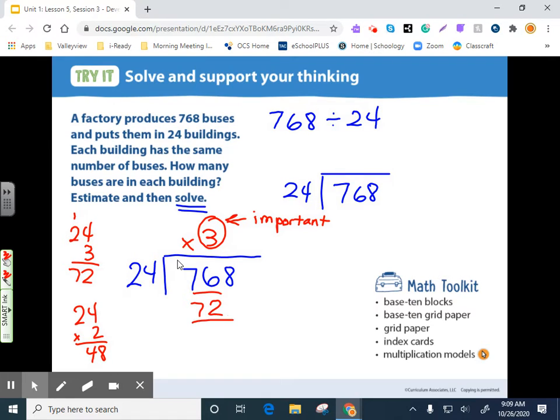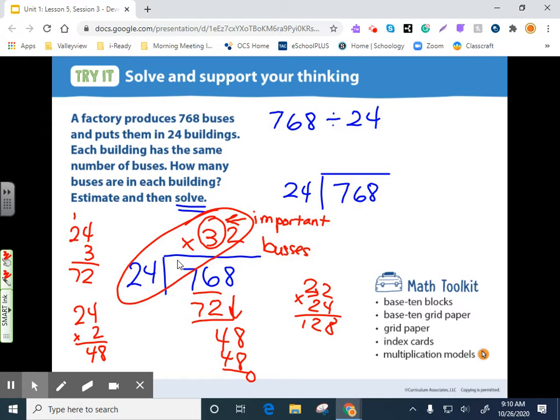All right. So 72. Bring down our 8. You know, 24 times 2, like I did right over here, gives us that 48. So 48. So we have 32 buses per building. 32 buses. And let's check our answer. You've got to multiply these. Let's do 32 times 24. We've got 8, 6, 7, 68. It matches our dividend. So we're good to go.